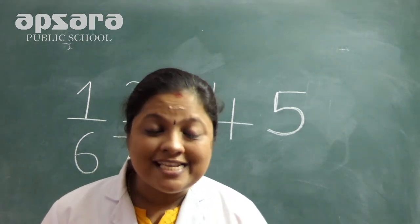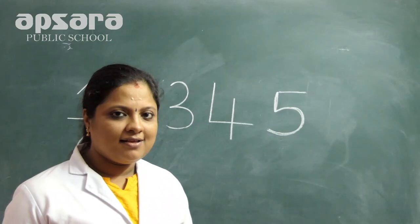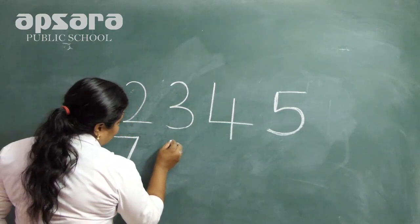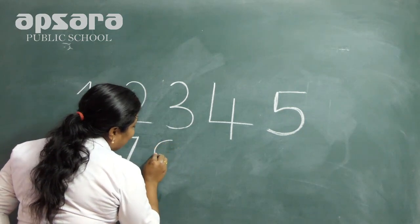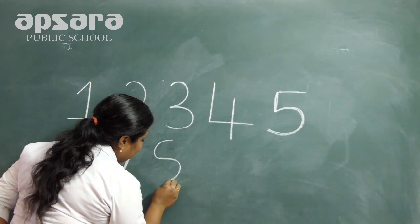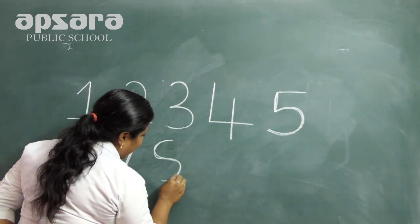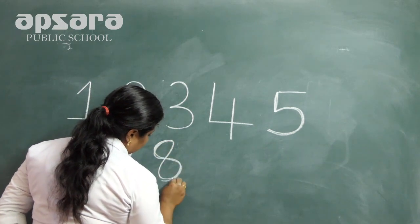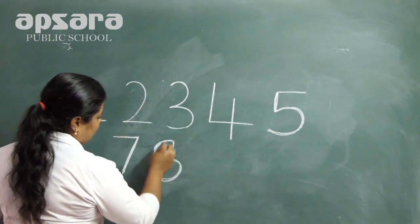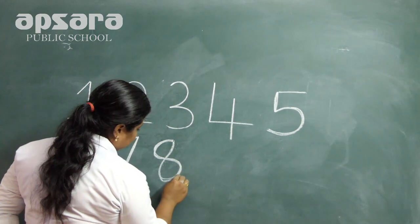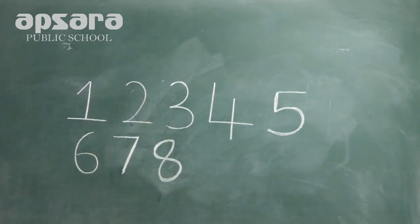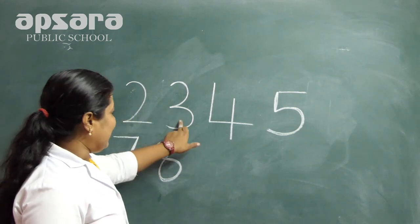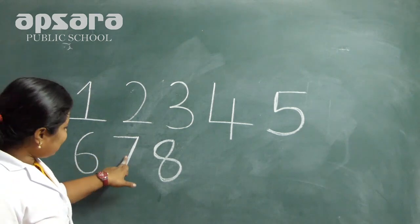Now tell me, which number comes after seven? Yes, good. Eight. It looks like the letter S joined into a curve. See here, this is number 8. How many numbers are there? 1, 2, 3, 4, 5, 6, 7, 8.